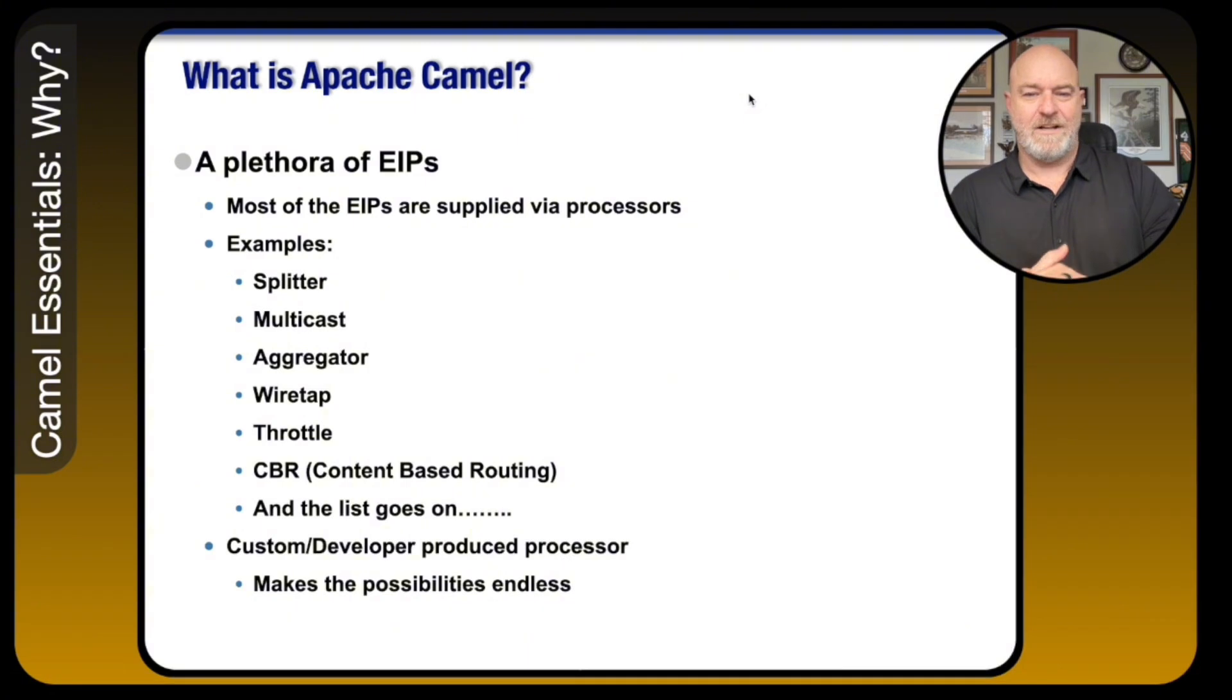So let's jump into what some of the EIPs are. What this does is it provides different capabilities out of the box. Things like splitter, multicast, aggregation. If you're not familiar with these, that's okay because you're probably not going to need them unless you know you need them. Things also that I think is very powerful are things like content-based routing.